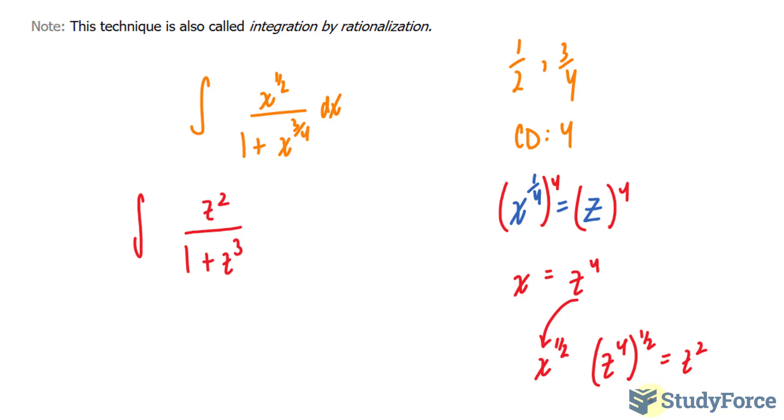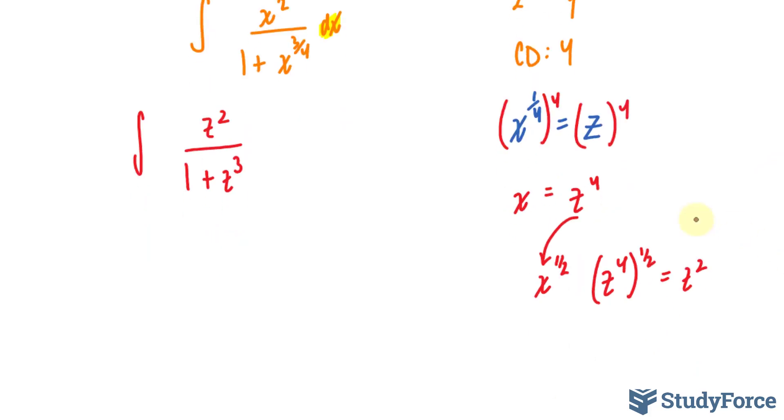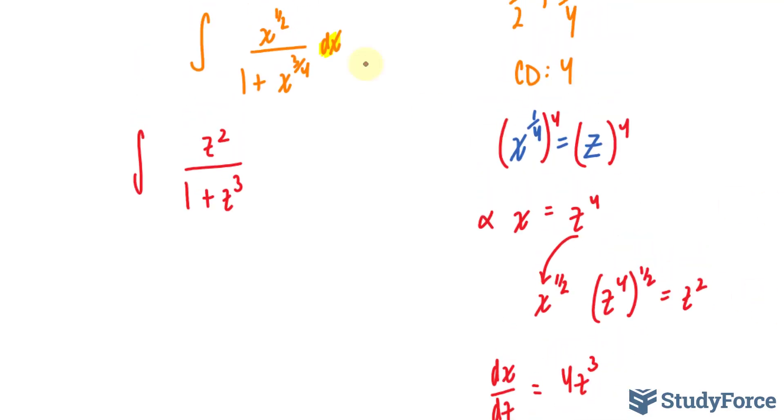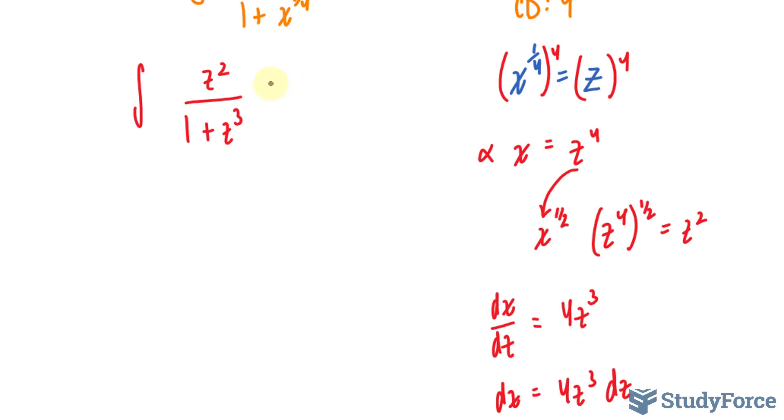Now we still have a problem because this integrand was formally in terms of x and we were integrating with respect to x. But now it's in terms of z. So what I have to do is find an alternative to dx. And the way I can do that is taking the derivative of this equation with respect to z. If I do that, I end up with dx over dz is equal to 4z to the power of 3. I use the power rule. And I'll isolate for dx by multiplying both sides by dz. That gives me dx is equal to 4z to the power of 3 dz. And I'll substitute that in place of dx. Giving me 4z to the power of 3 dz, and I'll put that in brackets.